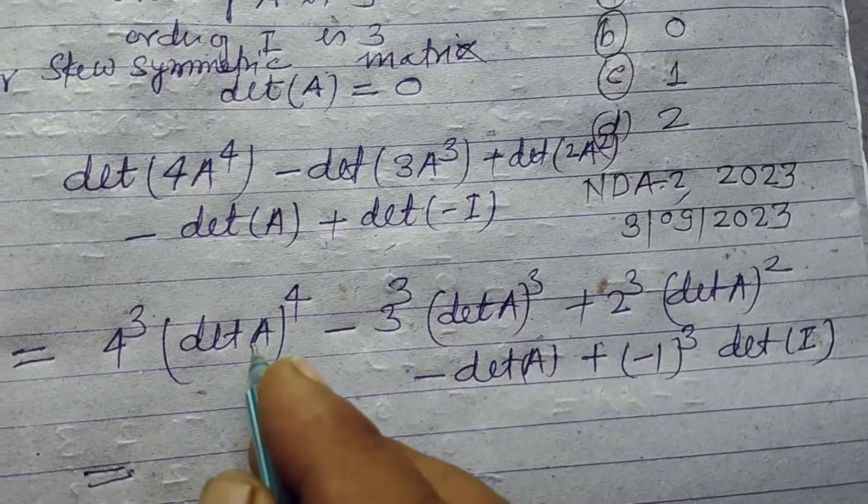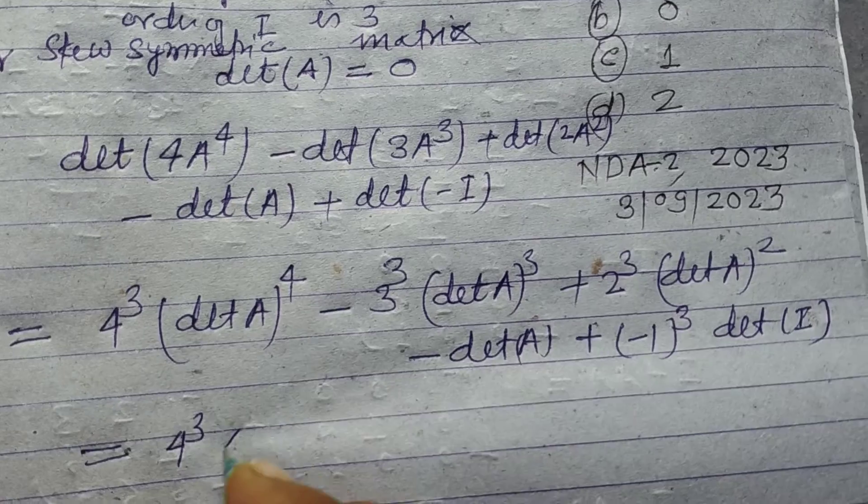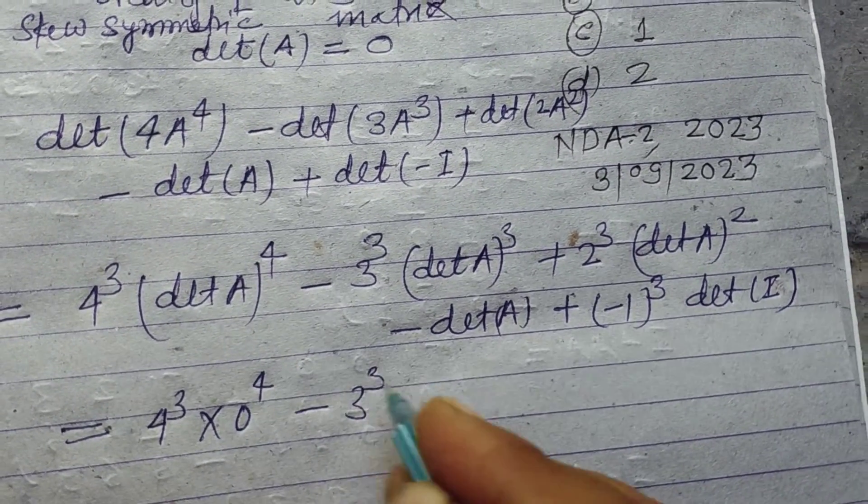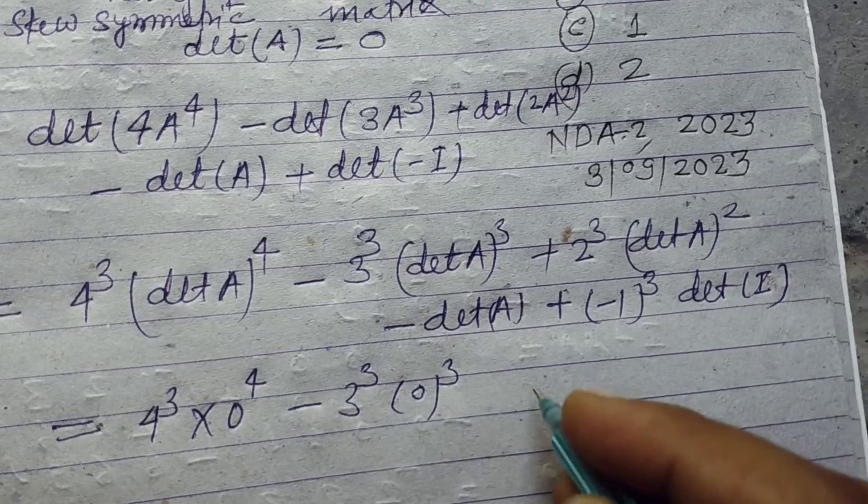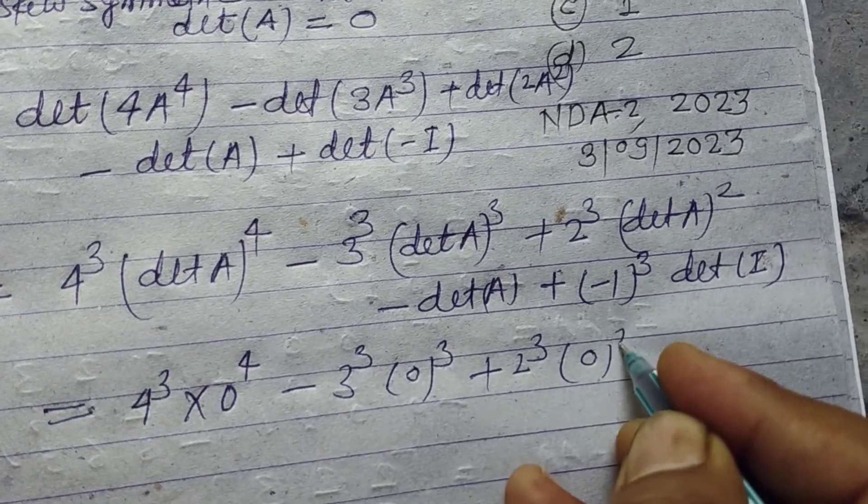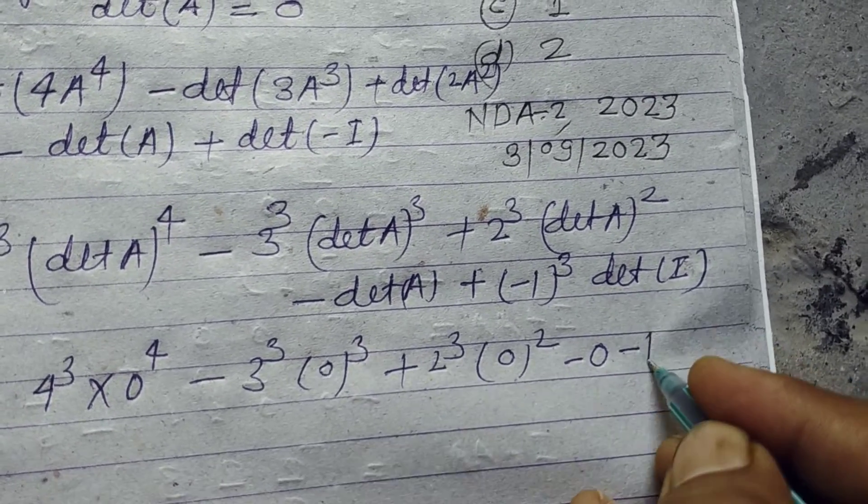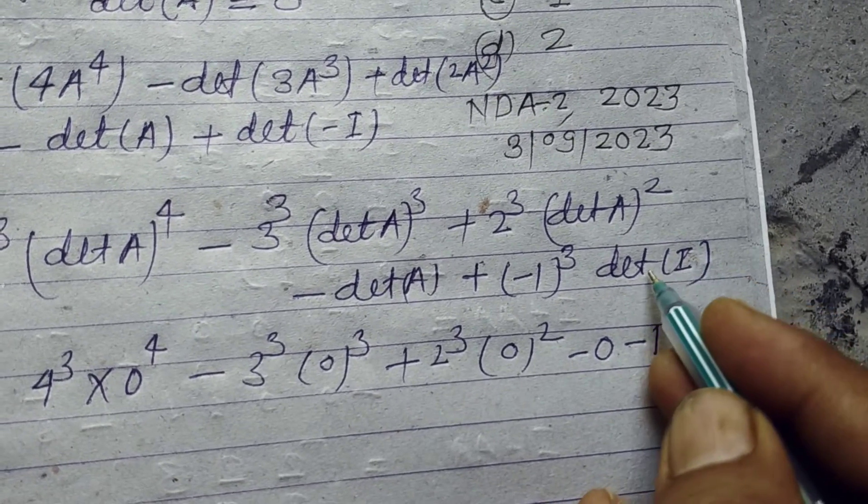So student, this is 0: 4³ into 0⁴, 3³ into 0³, 2³ into 0². Again, this is 1 and this is 0, and this is 1, and determinant of identity matrix is 1.